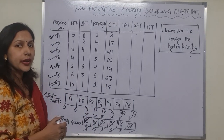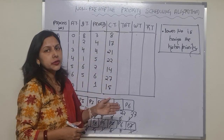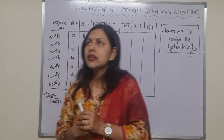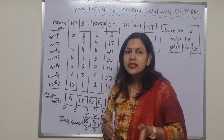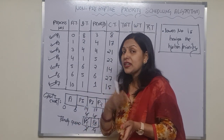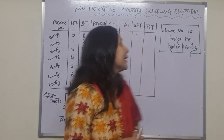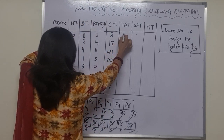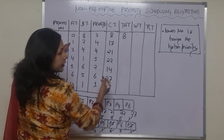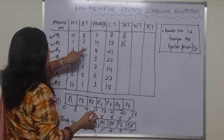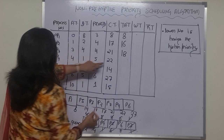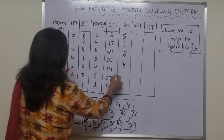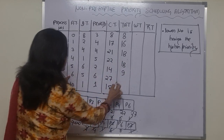Now we calculate the turnaround time using the formula: Turnaround Time = Completion Time − Arrival Time. So: P1 = 8 − 0 = 8, P2 = 17 − 1 = 16, P3 = 21 − 3 = 18, P4 = 22 − 4 = 18, P5 = 14 − 5 = 9, P6 = 27 − 6 = 21.